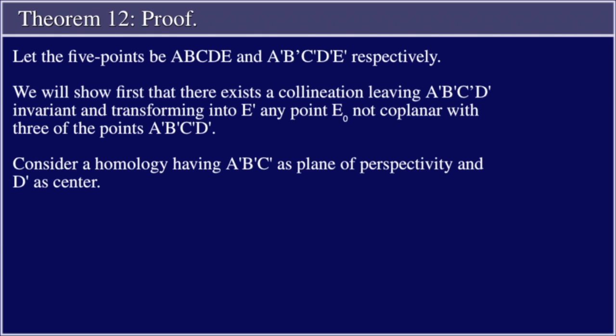We will show first that there exists a collineation leaving A prime, B prime, C prime, D prime invariant and transforming into E prime any point E0 not coplanar with three of the points A prime, B prime, C prime, D prime. Consider a homology having A prime, B prime, C prime as plane of perspectivity and D prime as center.